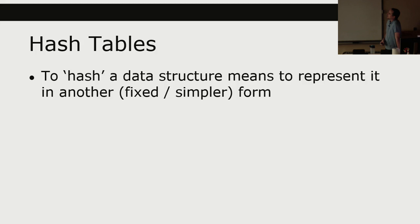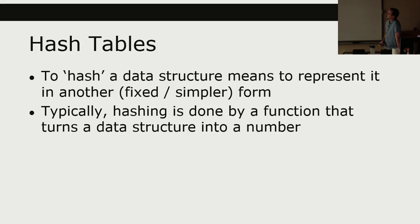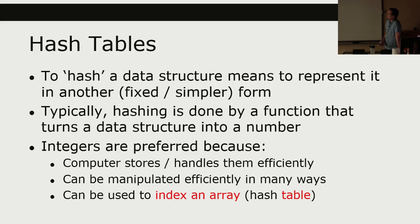So now that we know what a hash function is, what is a hash table? To hash a data structure means to represent it in another form — usually as integers. Hashing is typically done by a function that turns some data structure or file into a number. Integers are preferred as output because computers store and handle integers much more efficiently than other types of data like floating point values. Since they are whole number integers, we can also use them to index into an array, and this array indexed by a hash function is called a hash table.